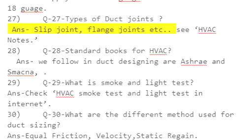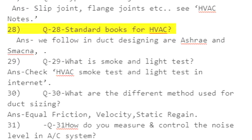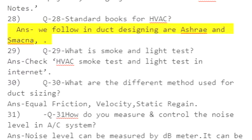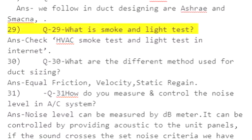Q27: Types of duct joints — answer: slip joint, flange joint, etc. See HVAC notes. Q28: Standard books for HVAC — answer: we follow ASHRAE and SMACNA for duct design.